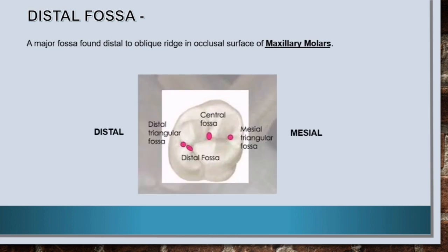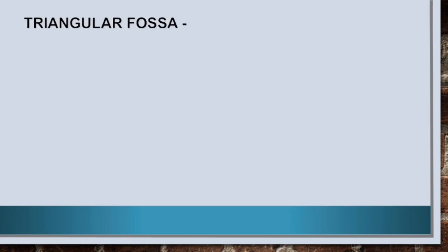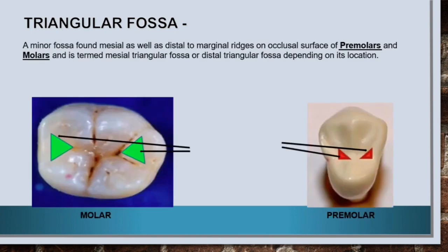Third is distal fossa. It is also a major fossa found distal to the oblique ridge on the occlusal surface of maxillary molars. Fourth is triangular fossa. It is a minor fossa found mesial as well as distal to marginal ridges on the occlusal surface of premolars and molars, and is called mesial triangular fossa or distal triangular fossa depending on its location.